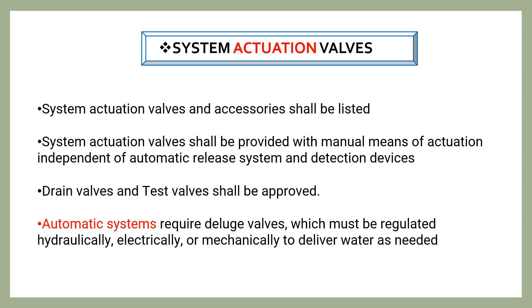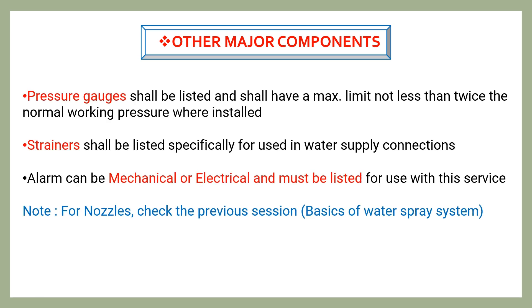Other major components include pressure gauges, strainers, and alarm bells. For nozzles, you can check the previous session on basics of water spray system. Pressure gauges shall be listed and shall have a maximum limit not less than twice the normal working pressure at the installation point. Strainers shall also be listed and are specifically used in water supply connections. Alarm bells can be mechanical or electrical — in electrical form we can use horn strobes — and they must be listed for use with this service.